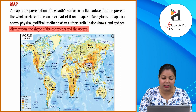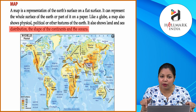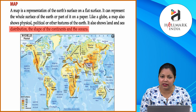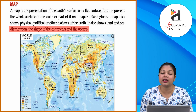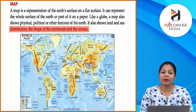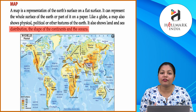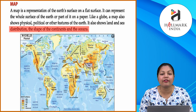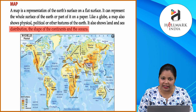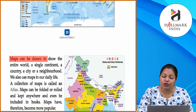Map kya hota hai? Yeh paper par bana hota hai jo represent karta hai — usi tarah jaise ek globe par earth ko represent kiya jata hai. Thik hai. Ek piece of paper par aap country dekh sakti hai. Country ke alava jitne bhi earth ke physical features hain, political features hain, wo sari dekhe ja sakti hain. Maps can be drawn to show the entire world, a single continent, a country, a city, or a neighborhood.